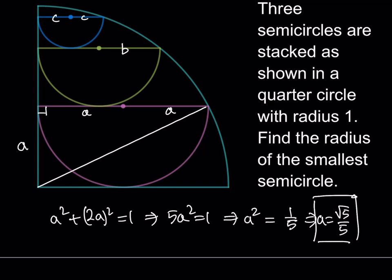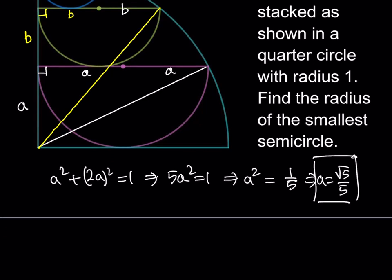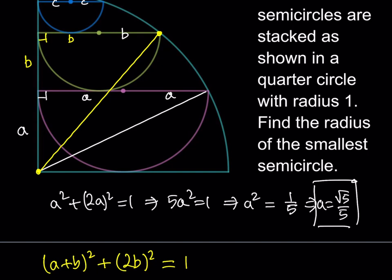Now I'd like to take this value of A and use it in the next equation. I'm going to connect the corner point this way to get another right triangle, where I can use the Pythagorean theorem. Calling this radius B, so this is also B here. I have a right triangle whose height is A plus B and whose base is 2B. We always pick those reference points because it makes the calculation easier.